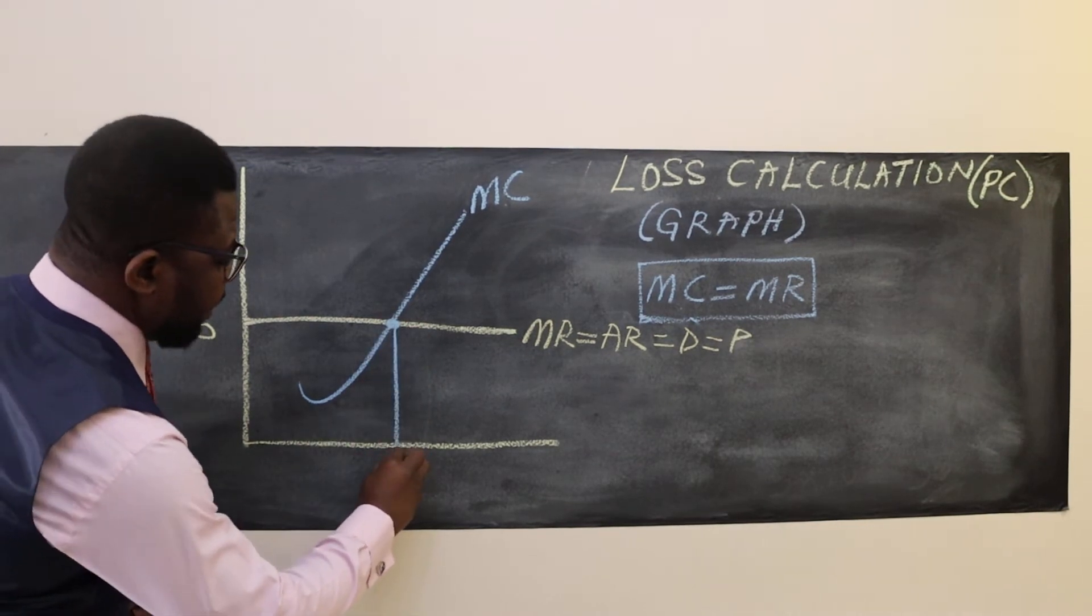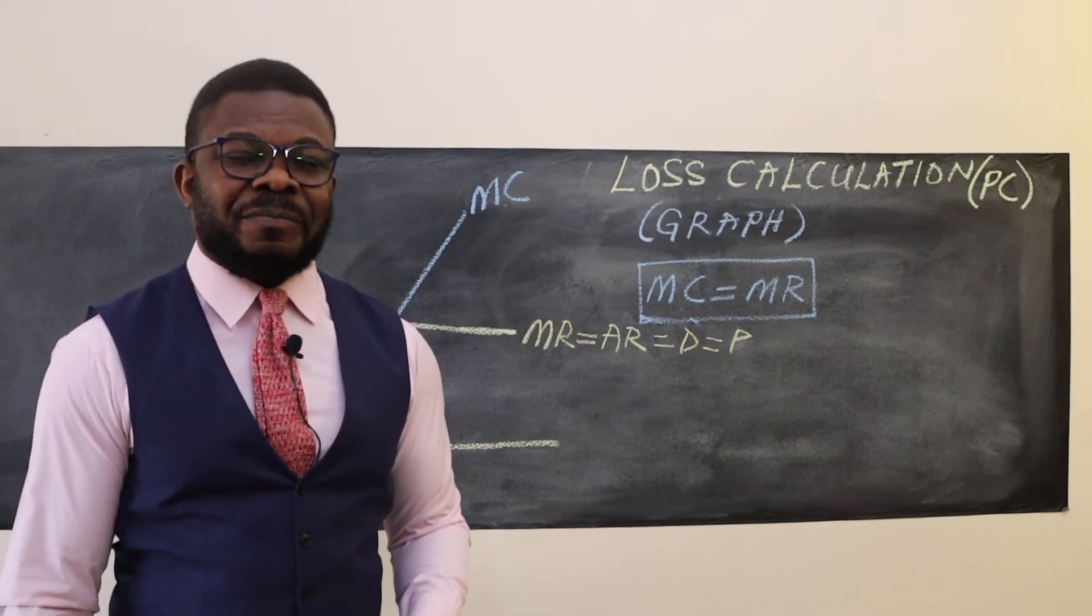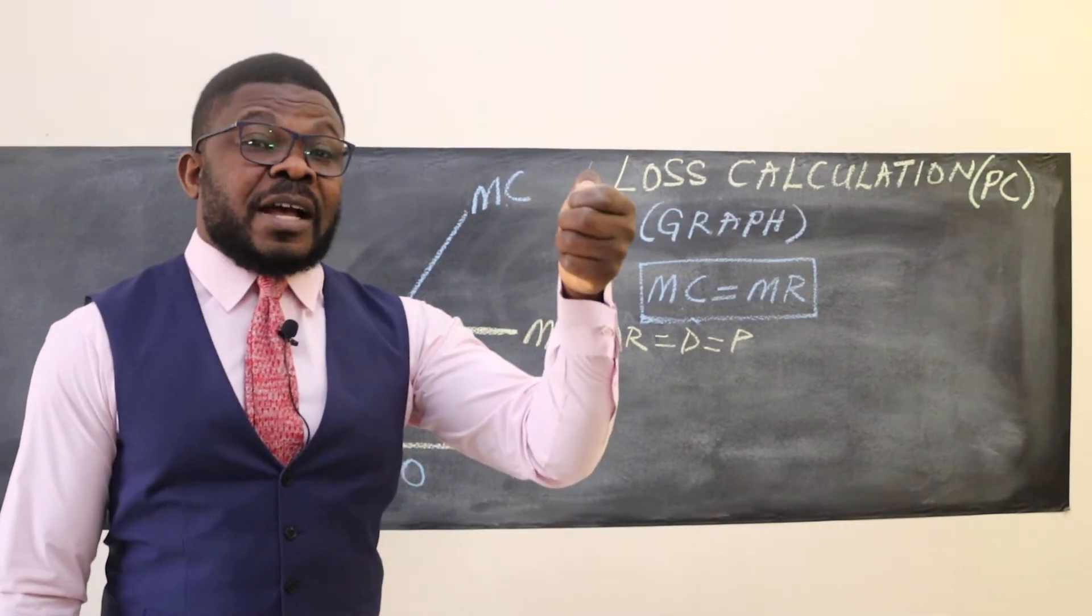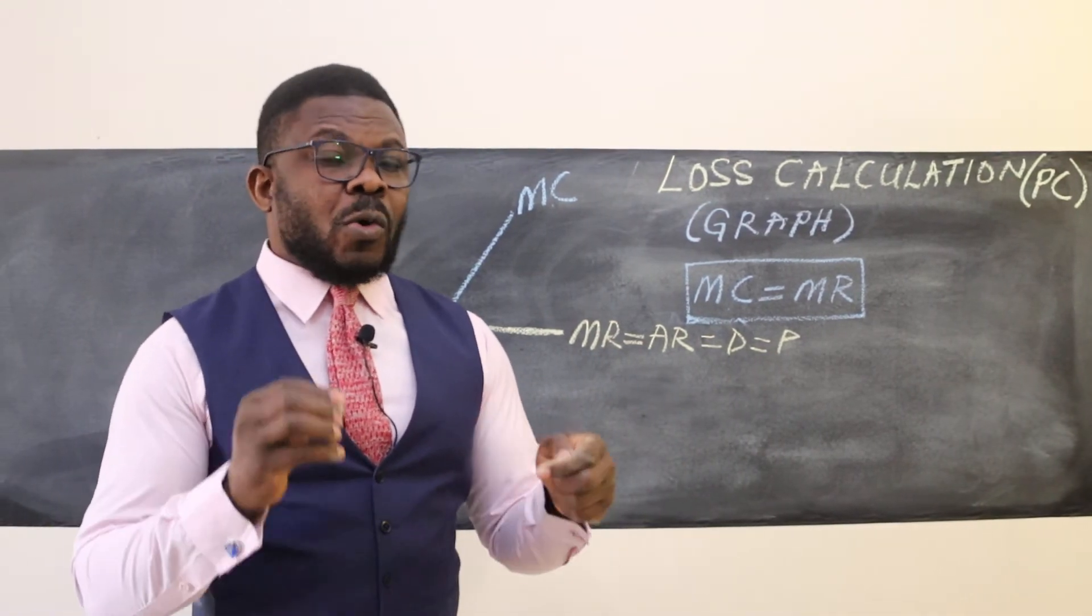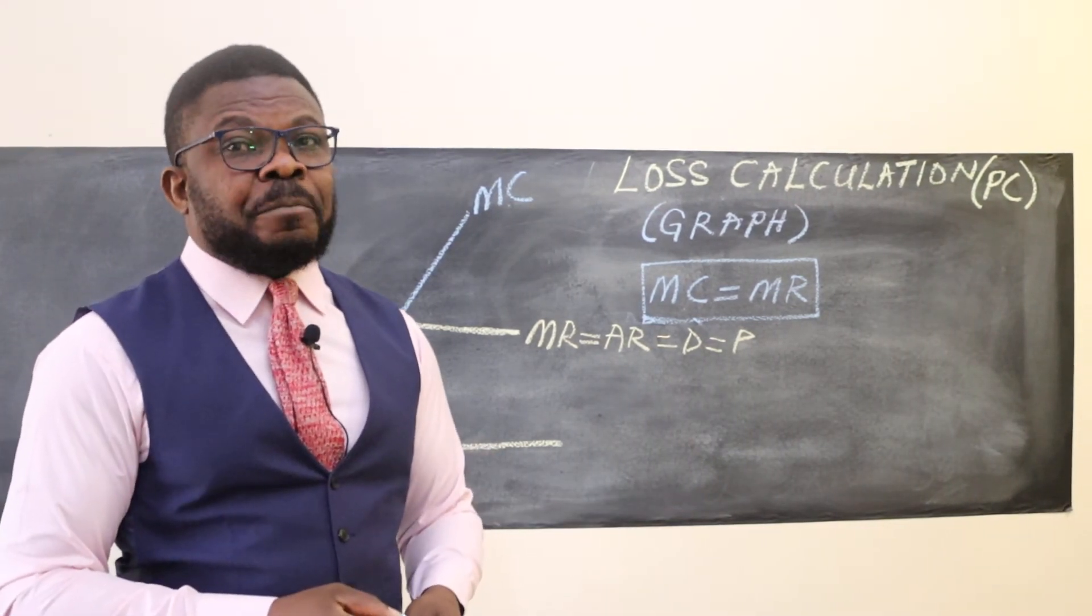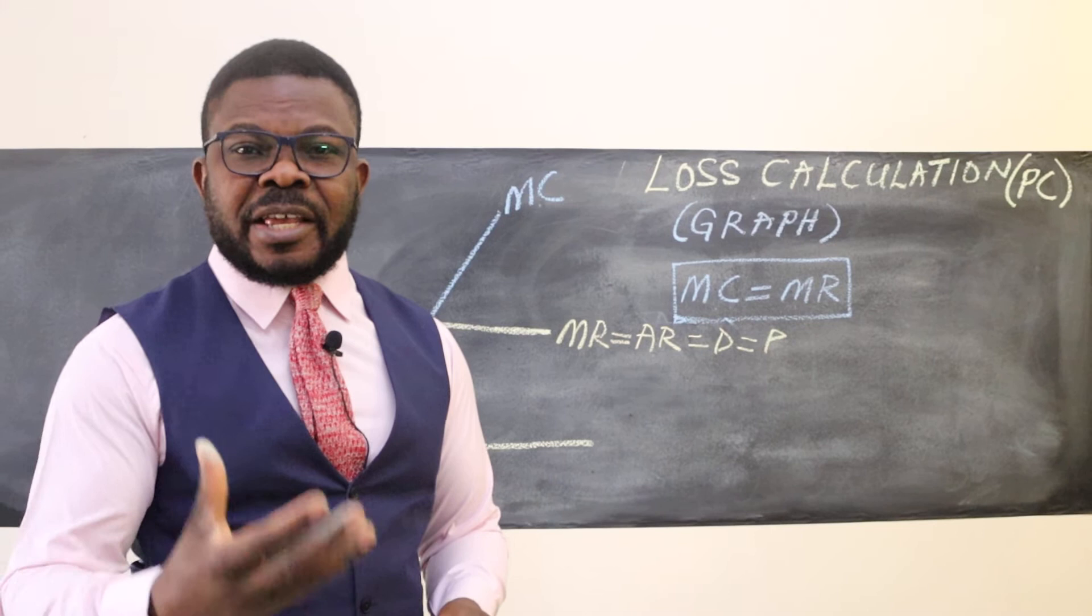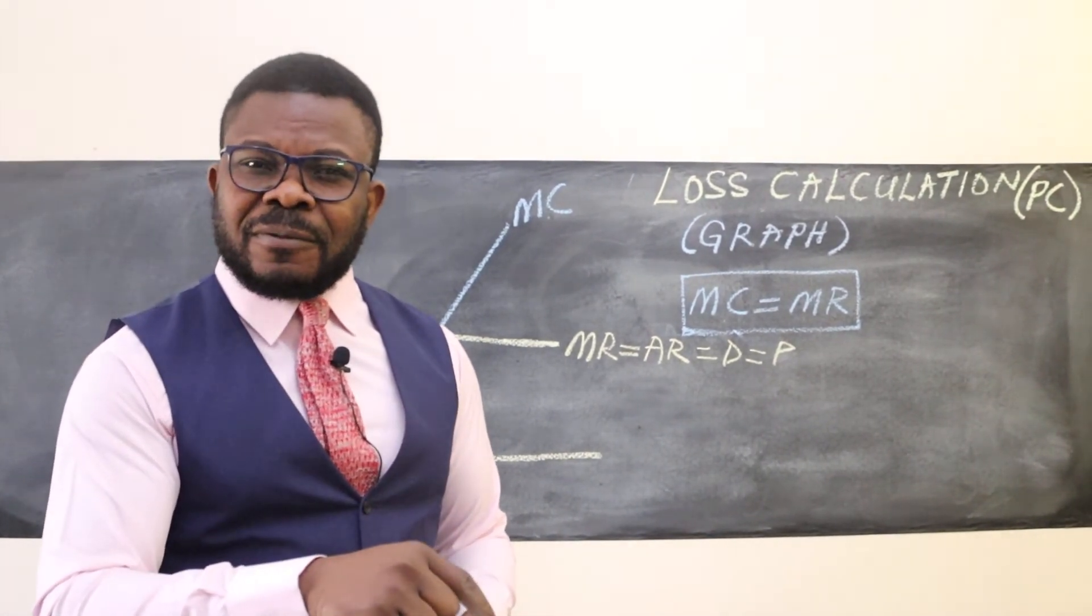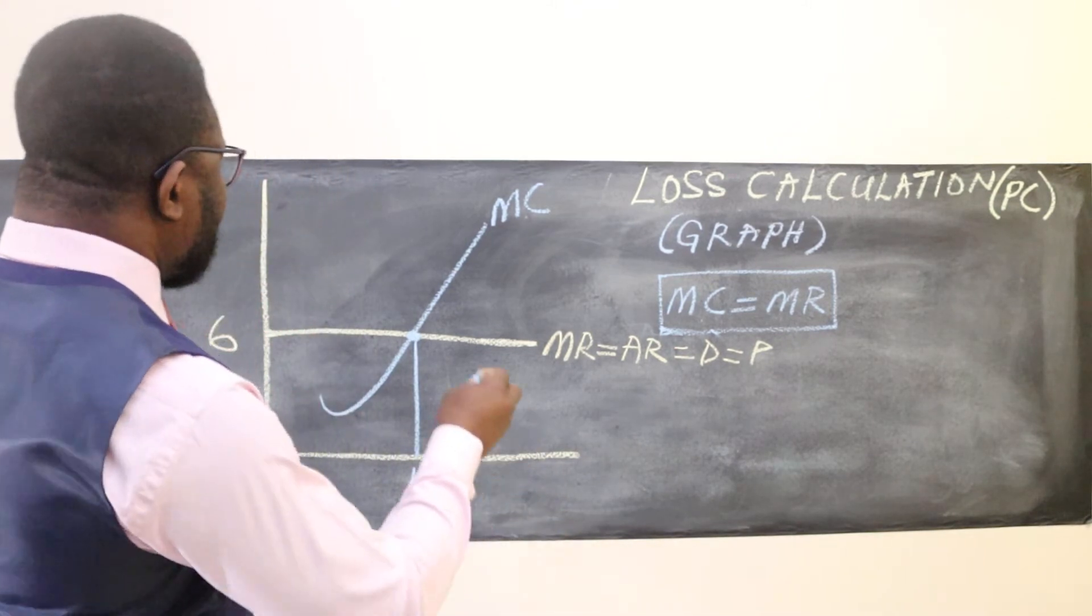Something is missing from our graph: the average total cost (ATC). Is it going to be higher or lower? That determines whether there is a loss or profit. Remember, if you're looking for a loss, make sure that your ATC is higher than the price. That means on average, how much you spend making your product is much higher than the price you're charging in the market.